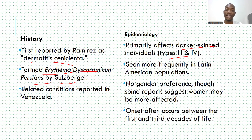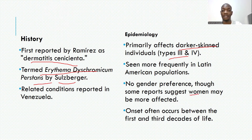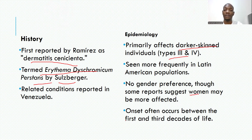It is more frequently seen in Latinas, with no strong gender preference — reports suggest more women are affected than men, but when you look at the level of significance, it is less than 2.5, meaning there is no major gender bias. The sites involved first are the intertriginous areas, and it can naturally spread to the rest of the body.